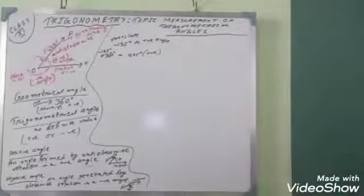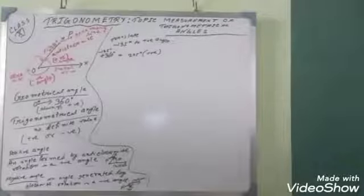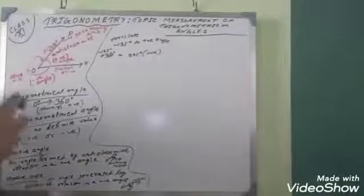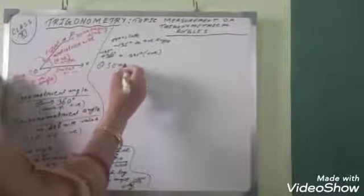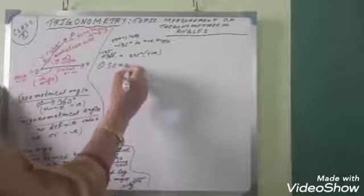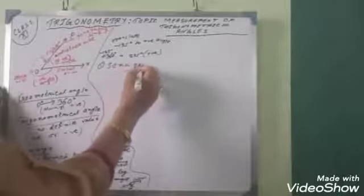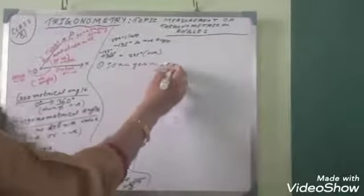Next is the system of measuring angles. There are three systems of measuring angles.